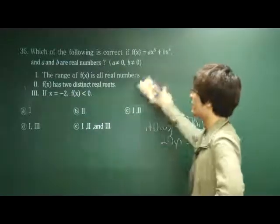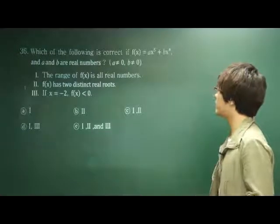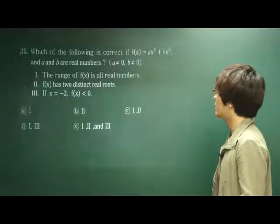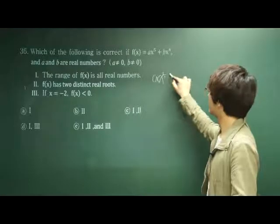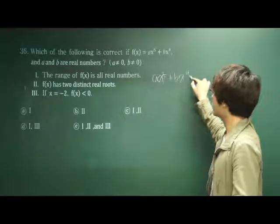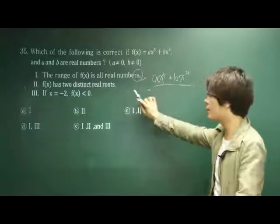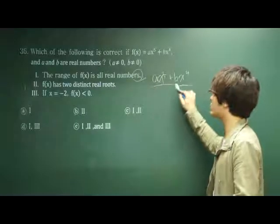Problem 36: Which of the following is correct if f(x) equals ax to the fifth plus bx to the fourth, and a and b are real numbers? Since we're dealing with x to the fifth power and x to the fourth power, the range of f(x) is all real numbers.